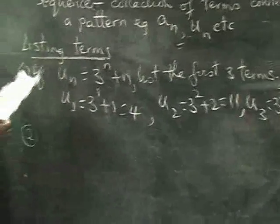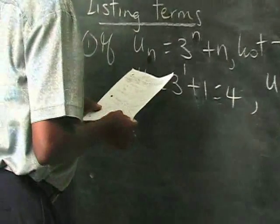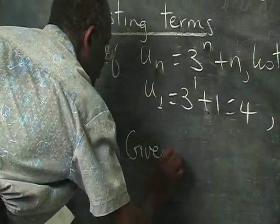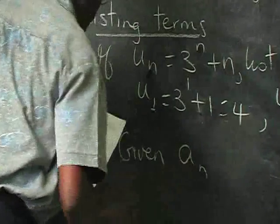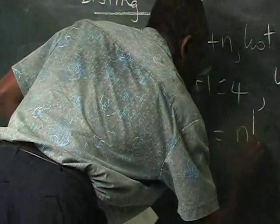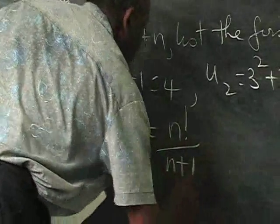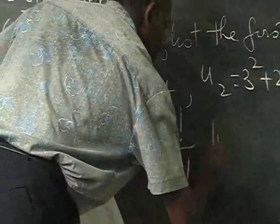Let's look at another example as we move along. Suppose we have AN, given the sequence AN is equal to N factorial over N plus 1. We want to list again the first three terms.